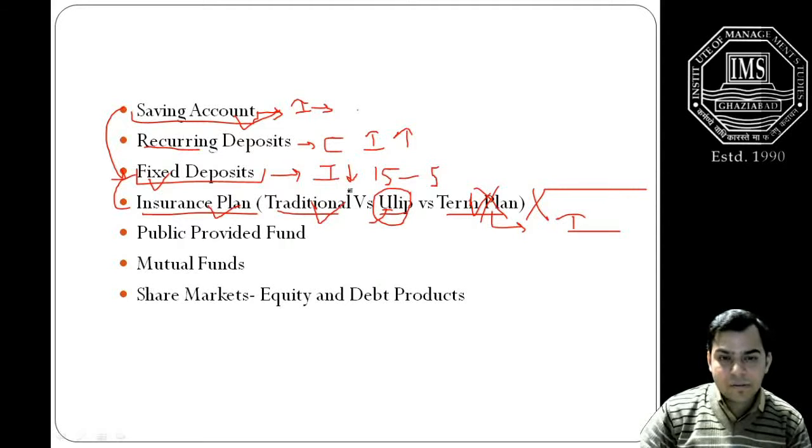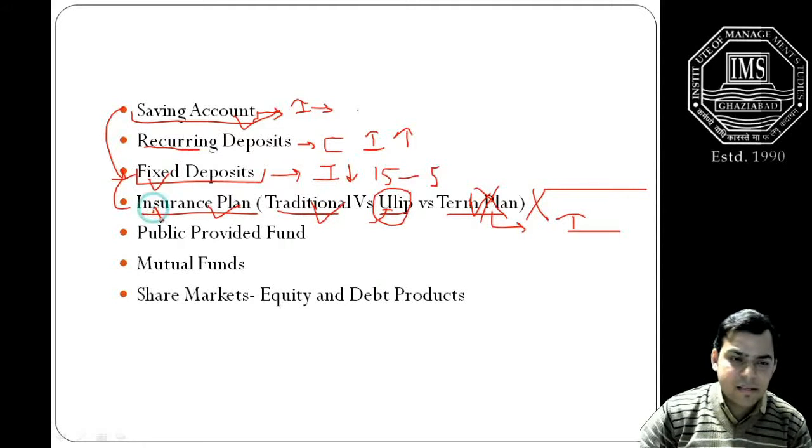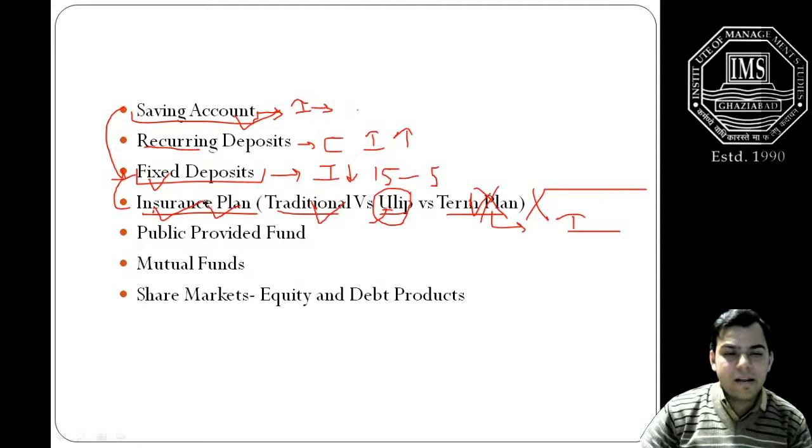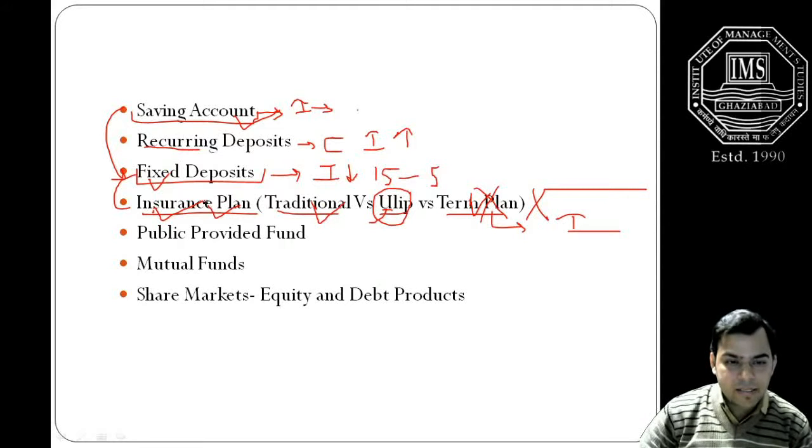And it does carry a higher amount of risk in comparison to the traditional plan. Traditional plans are actually the plans where you have some kind of survival benefits also, and if you die in between, you will be having some kind of lump sum amount to be received. In India, LIC is considered the primary player in the insurance market. It still holds the majority of insurance products which the people are having at their disposal.